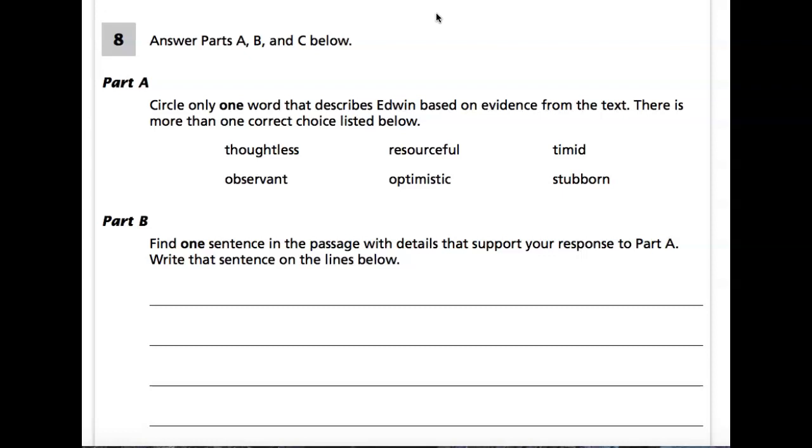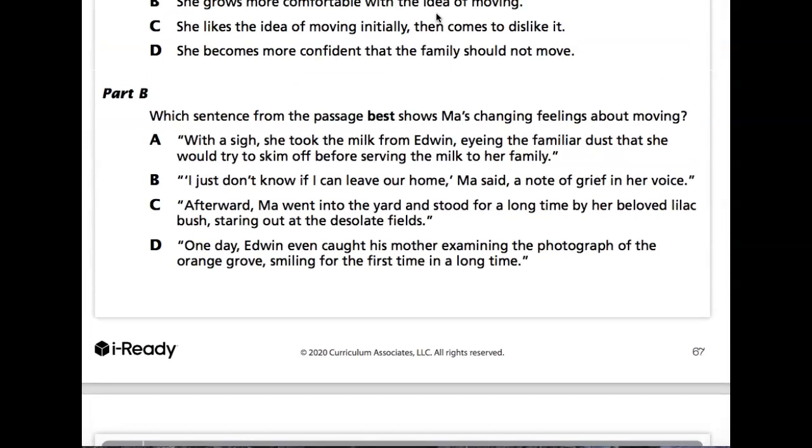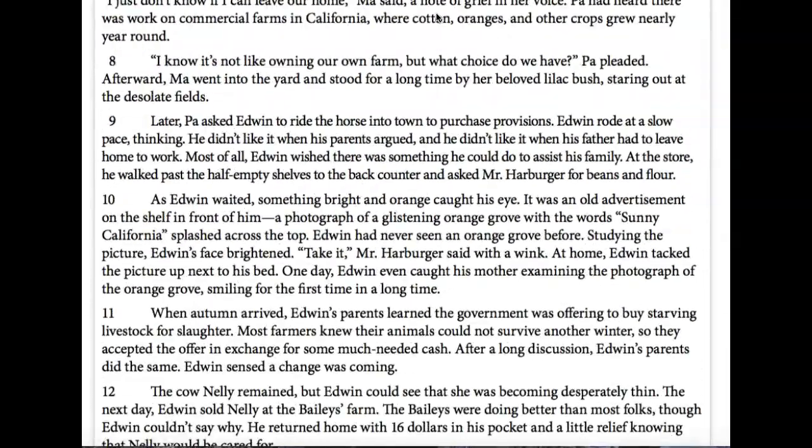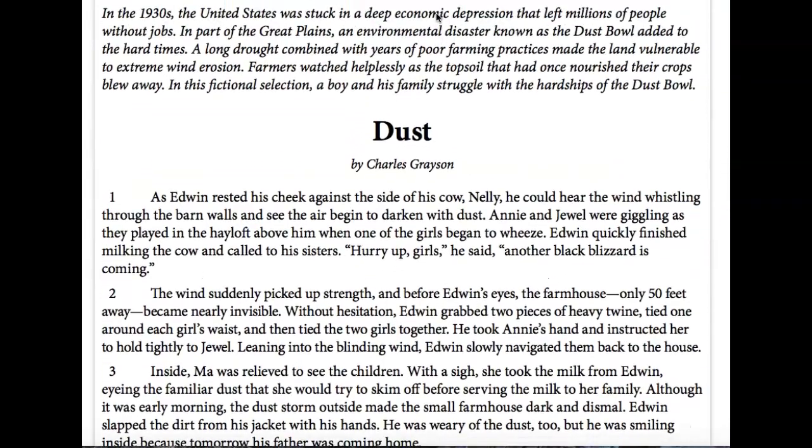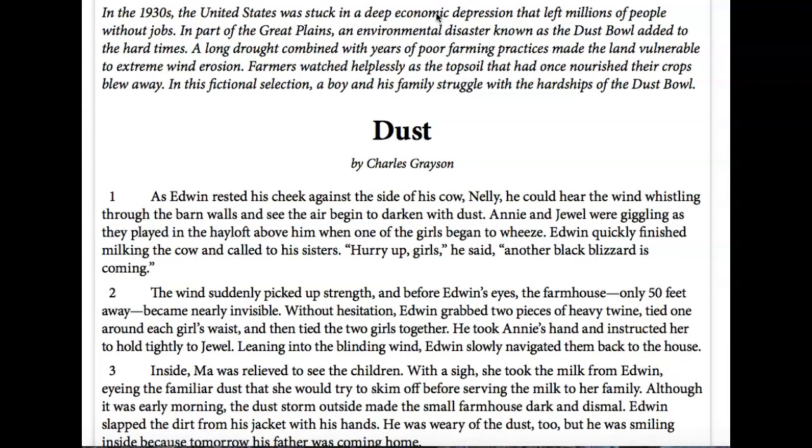Page 8, page 69, is asking us to circle one word that describes Edwin based on evidence from the text. Now you'll remember who Edwin is, let's go back and look at Dust, this story about this young boy in the 1930s during the Dust Bowl and the Depression. There was an economic depression during that time and then there was the environmental disaster of the Dust Bowl.